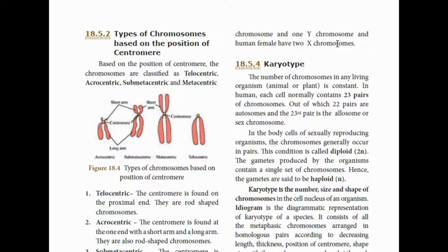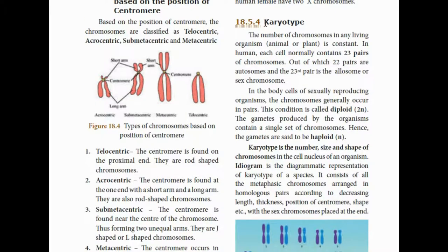In females, the 23rd pair has two X chromosomes, while in males it is one X and one Y chromosome. The presence of Y gives male characteristics, and two X chromosomes gives female characteristics. The number of chromosomes in any living organism, whether animal or plant, is constant. In humans, each cell normally contains 23 pairs of chromosomes — 22 pairs are autosomes and the 23rd pair is the allosome or sex chromosome.